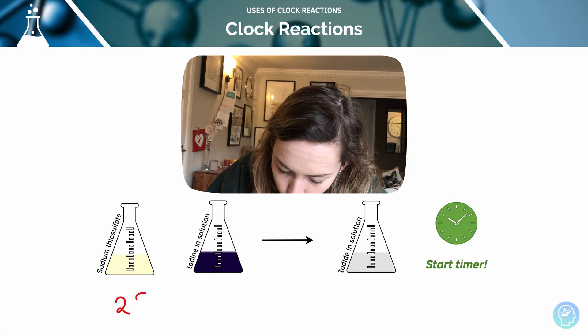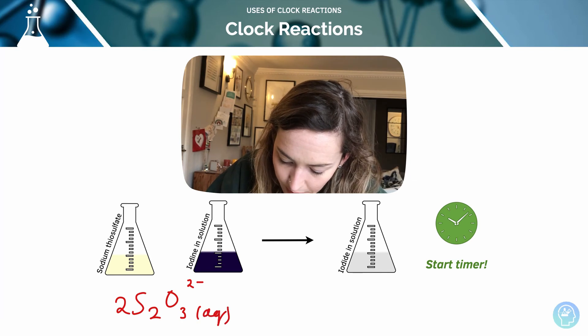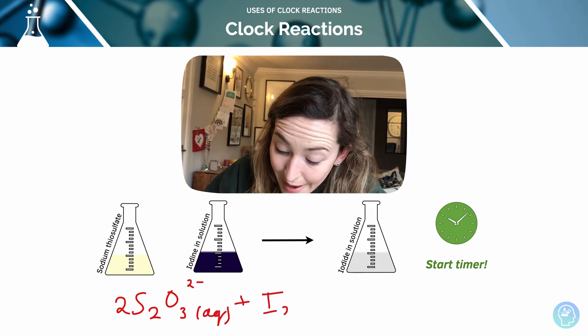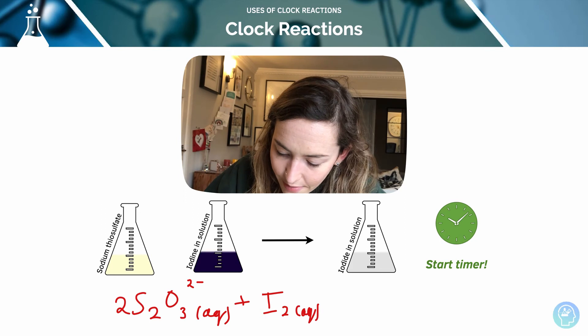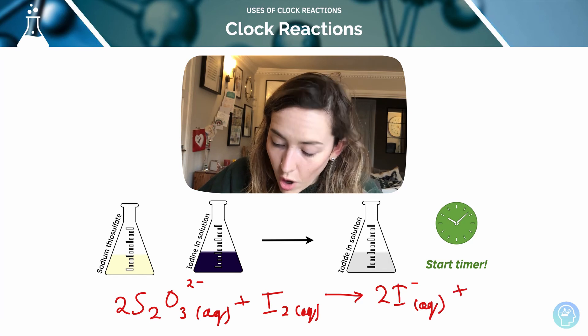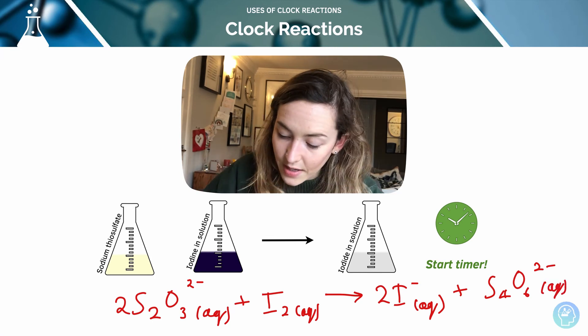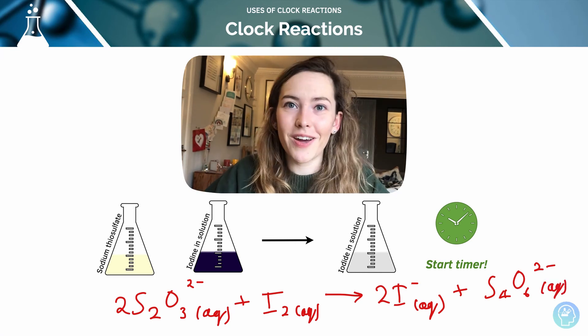So we've got two moles of S2O3 2- our thiosulfate ions, and that's going to be aqueous, plus my iodine that it's reacting with, and again that's aqueous, it's going to give us two moles of iodide ions, and S4O6 2- aqueous, and that is colorless. And that's when we start the timer.